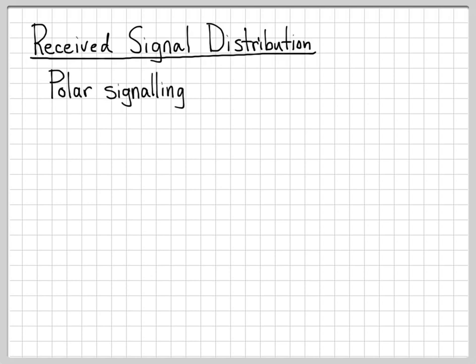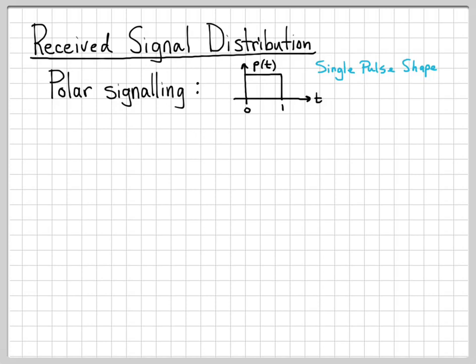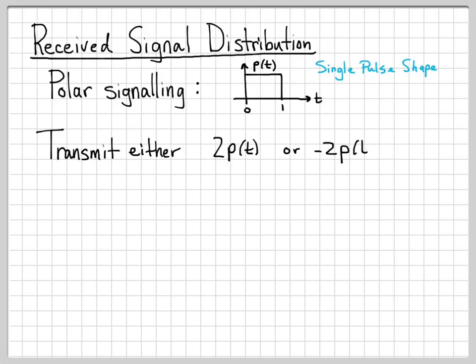What we're going to be investigating specifically is what we call polar signaling. With polar signaling, you have a pulse shape — for the sake of this problem, let's assume we have a pulse of length one second, calling this pulse P of T. With this single pulse shape, we convey bits of information. For example, I'm going to transmit either 2P(T), multiplying the pulse P of T by 2, or I'm going to transmit minus 2P(T).